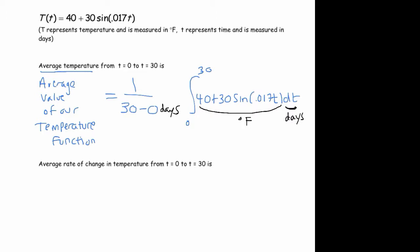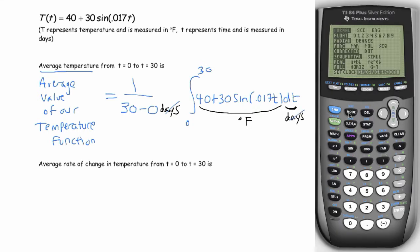Once you evaluate the integral and then multiply by 1 over 30, these days cancel, and you've got your units being temperature. So you've found average temperature.